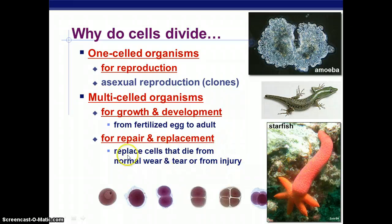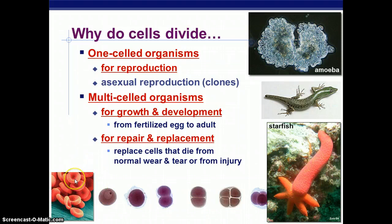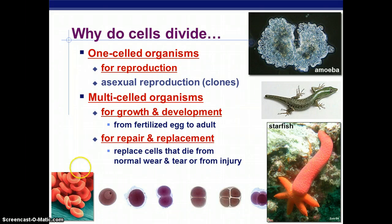Normal wear and tear is something that your blood cells or your skin cells do all the time — these are things that are constantly being replaced in your body.